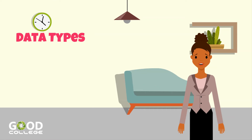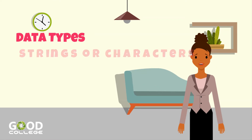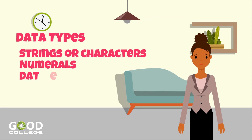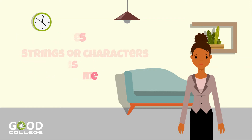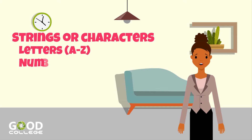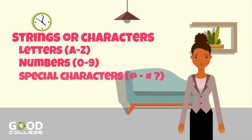Data types can generally be divided into three categories: strings or characters, numerals, and date and time. String and characters can contain letters, numbers, and any special characters.